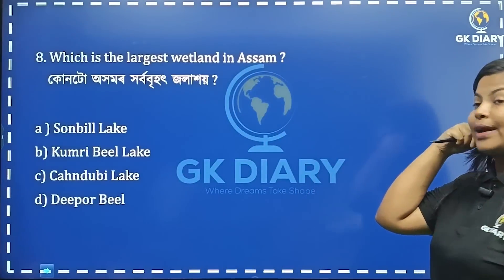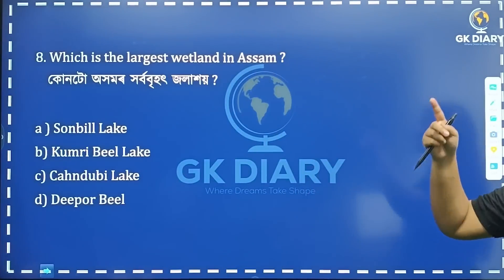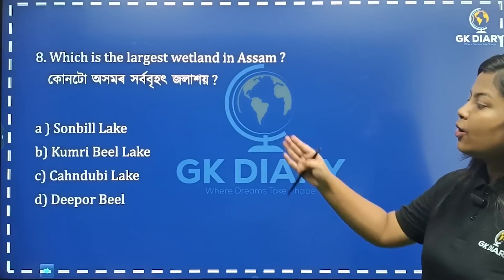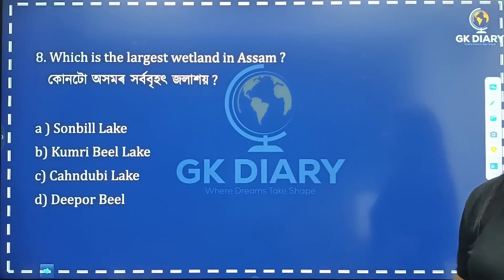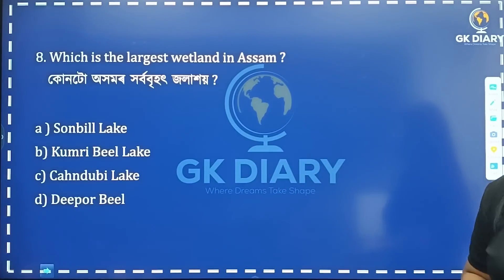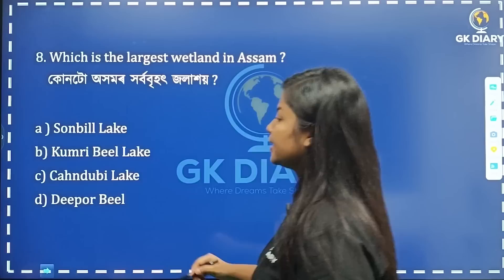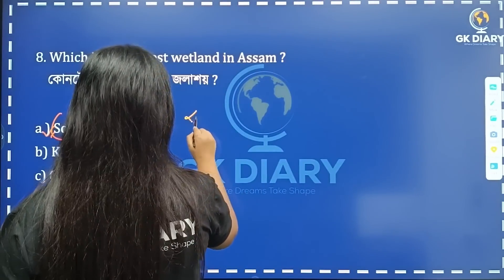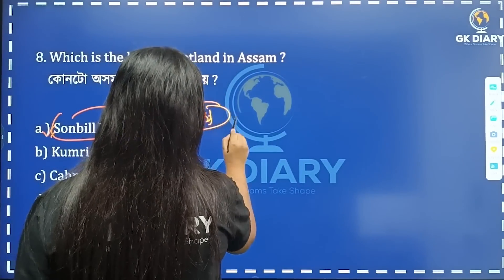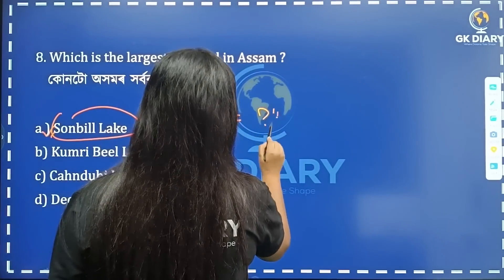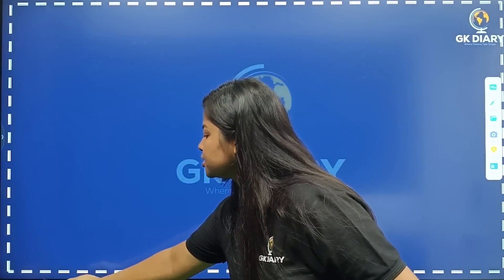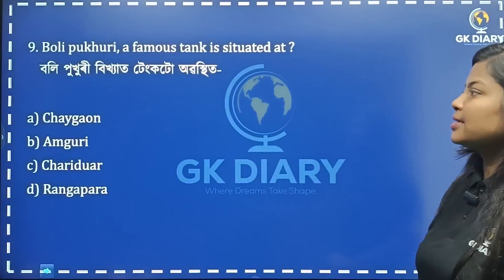Next: which is the largest wetland in Assam? Among the options — Son Bil, Kumri Bil, Chandubi, and Deepor Bil — the correct answer is Son Bil, Option A. Son Bil is a wetland. Please note which district Son Bil is located in and add it in the comments.